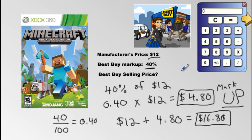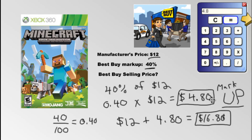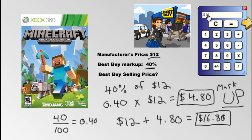If you did this on your calculator, you would have typed in 0.40 times $12 and got 4.8. Maybe you're wondering why I wrote $4.80 versus 4.8 — they're the same thing. If a zero comes in the last spot after the decimal, you can delete it. But money always has two decimal spots, so we fill in that zero. It's $4.80, not $4.08.